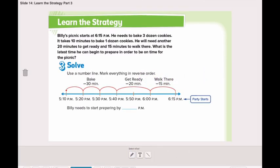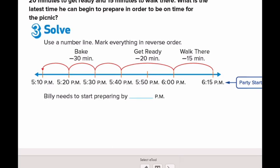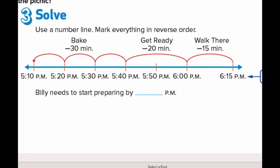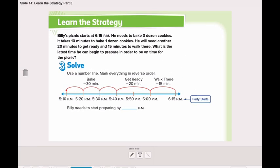Moving to step 3, which is solving the problem. We will use a number line, shown here, and we will mark everything in reverse order. Why is it reverse order? Because we don't know the start time. We need to find the start time. The start time is unknown.